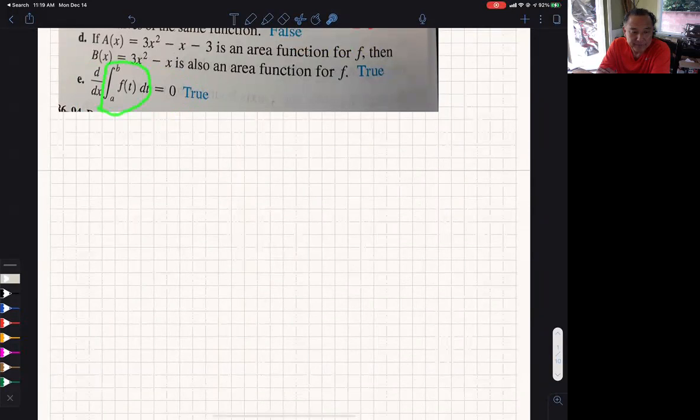You're going to get some number from that. What's the derivative of any constant? Zero. Okay? Some of you might get confused with the fundamental theorem of calculus.